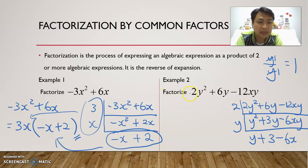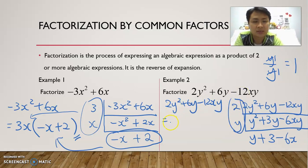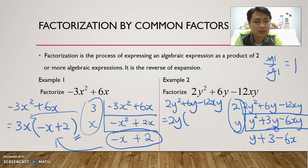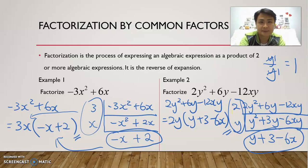So the final answer for this question: 2y squared plus 6y minus 12xy equals 2y times open bracket y plus 3 minus 6x. We took out the common factors 2 and y, giving us the factor 2y outside the bracket, with y plus 3 minus 6x remaining inside.